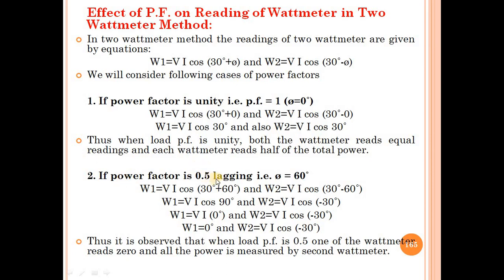Case 2: Power factor is 0.5 lagging, i.e., φ = 60°. Substituting: W1 = V·I·cos(30° + 60°) = V·I·cos(90°) = 0, and W2 = V·I·cos(30° − 60°) = V·I·cos(−30°). So W1 = 0 and W2 reads a positive value. Thus when load power factor is 0.5, one watt meter reads zero and all the power is measured by the second watt meter.